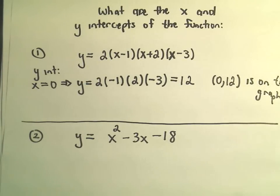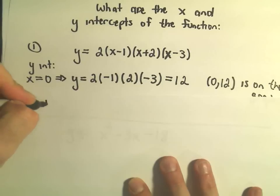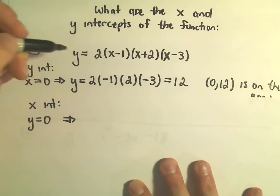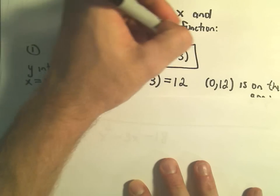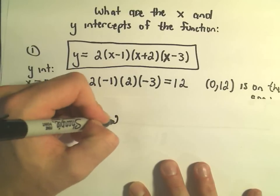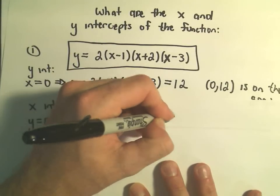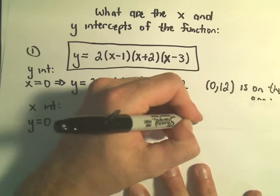To find the x-intercepts, we substitute y equals 0. If we plug in y equals 0 in our equation, we have 0 on the left and 2(x-1)(x+2)(x-3) on the right.